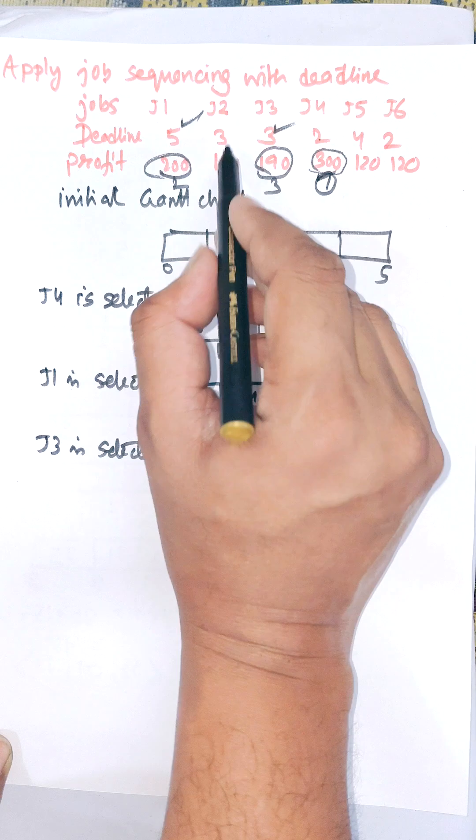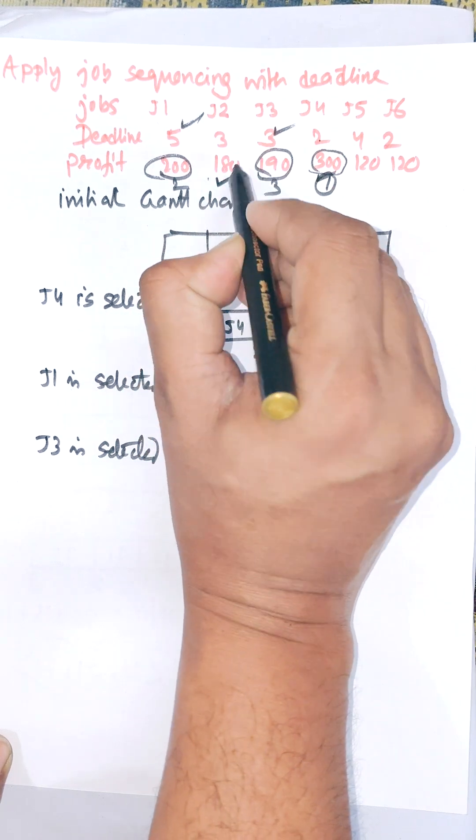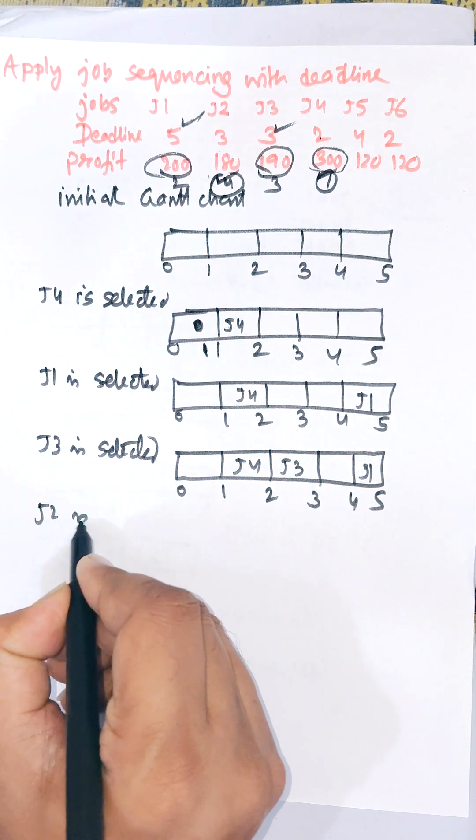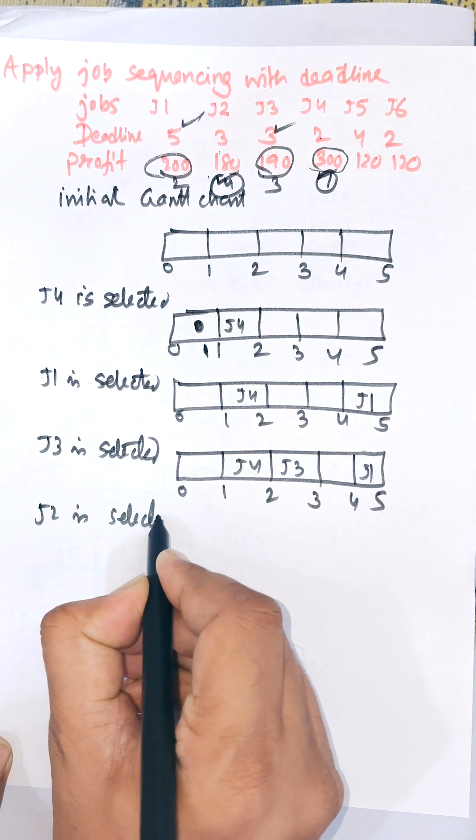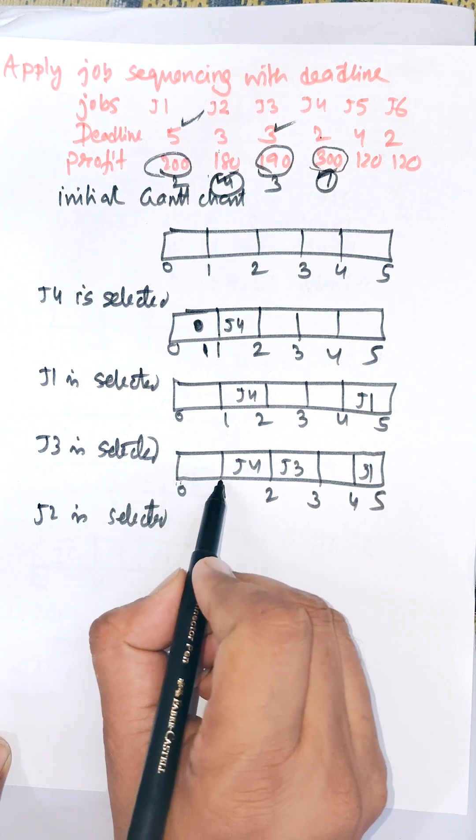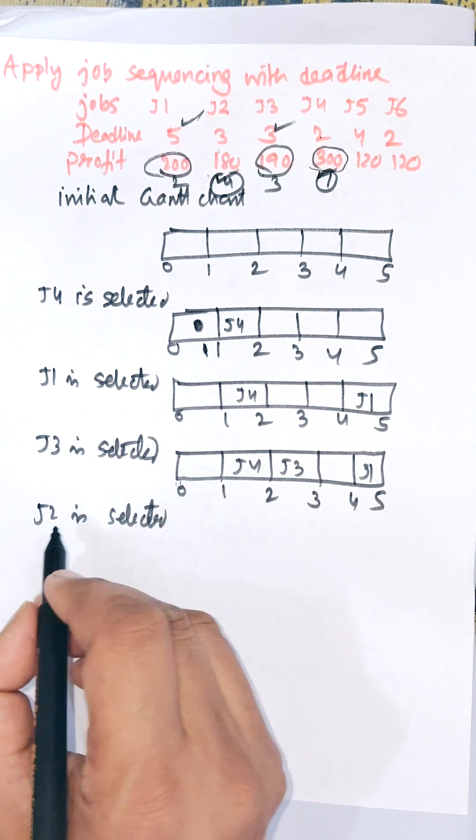Next maximum property is J2. J2 deadline is 3 and J2 is selected, and deadline is 3. And there is in between 0 to 3, and 0 to 1 unit are available, 0 to 1 unit are available.